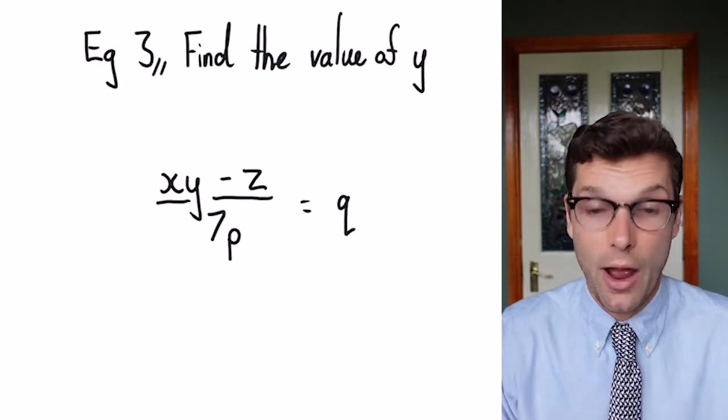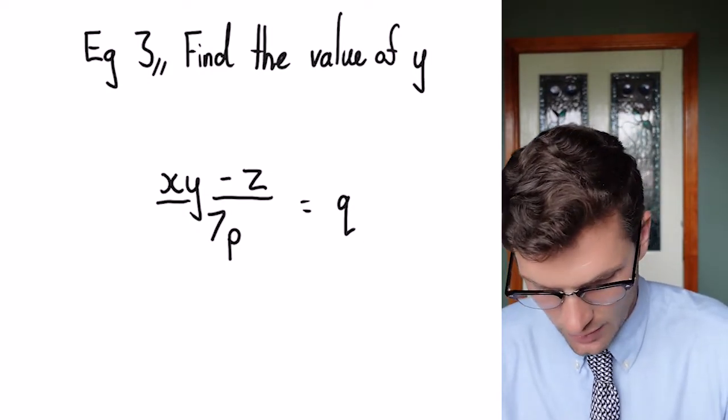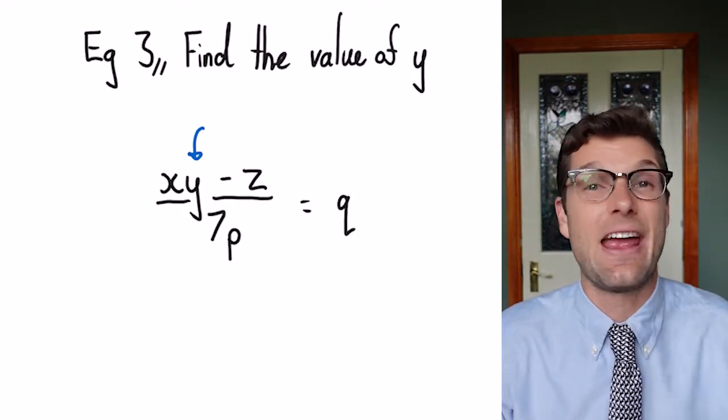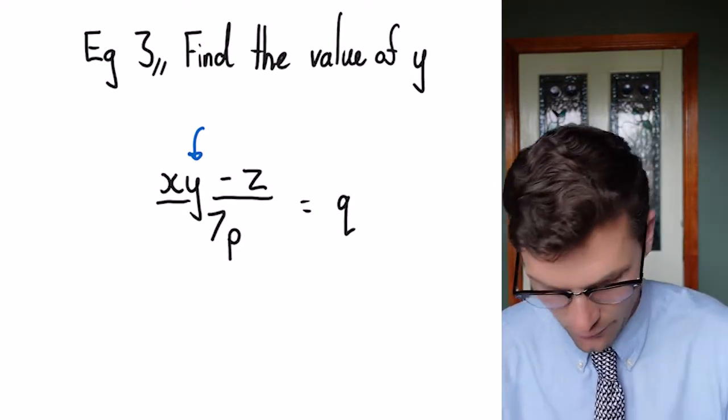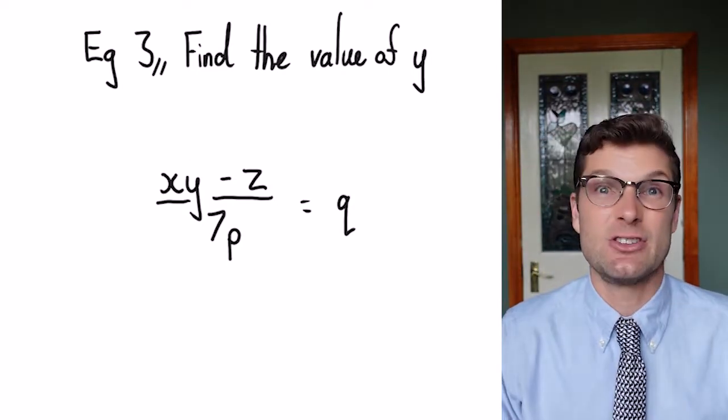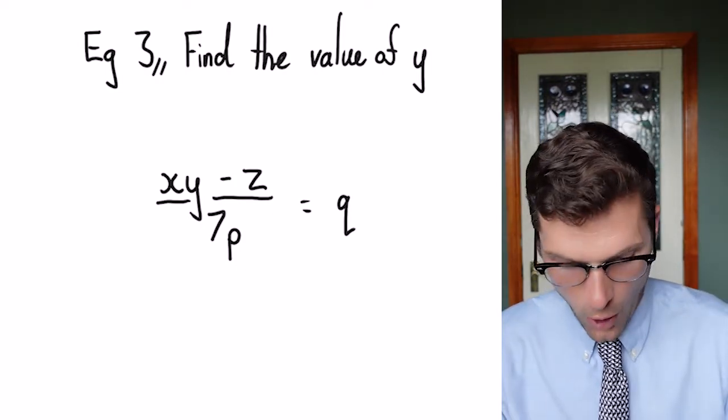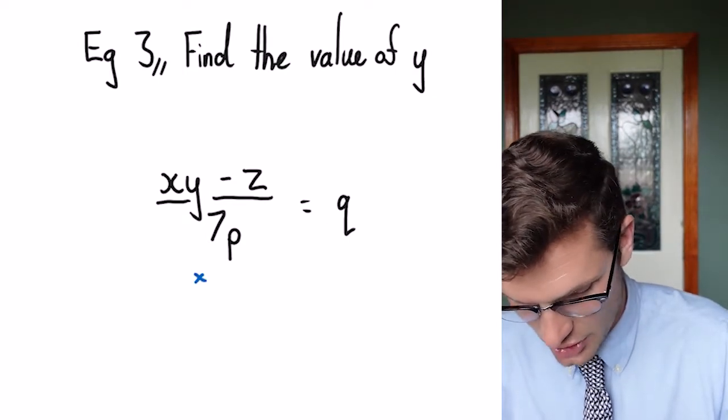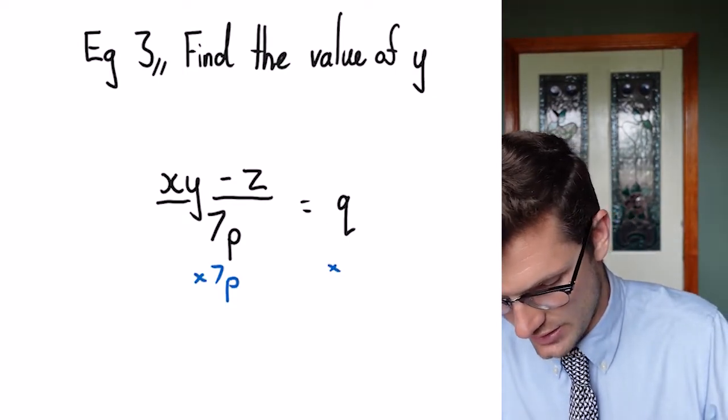So we've got to find the value of y. So it is important here that we know that this is what we're trying to find out. So we've got to do everything in our power to get that y by itself. So the first thing we've got to do is get rid of the 7p. That's furthest away from the y. And because it's divided by 7p, we've got to times both sides by 7p.